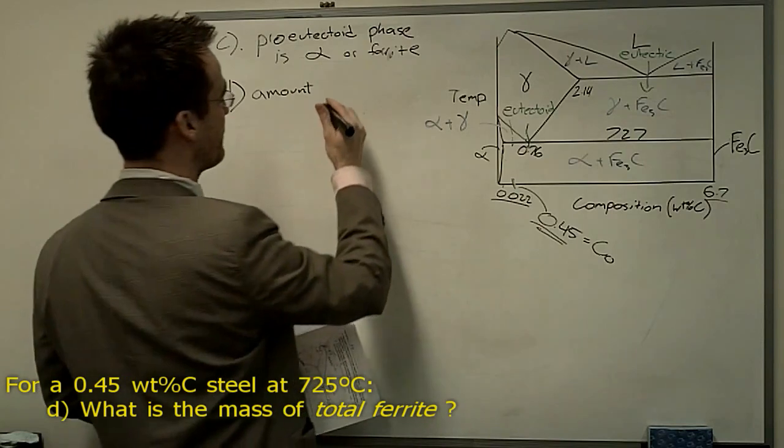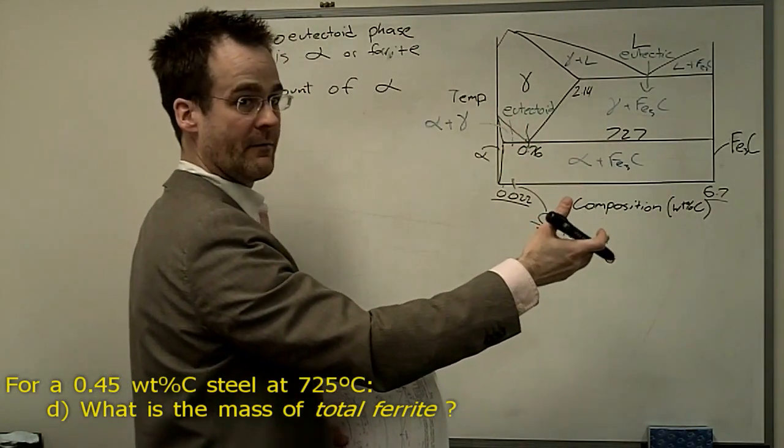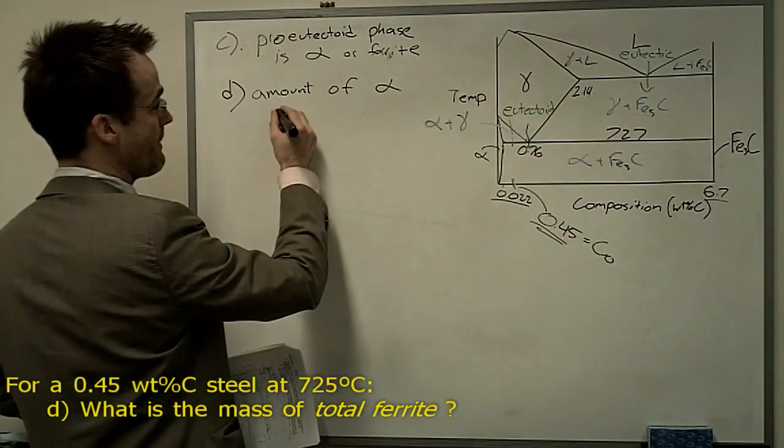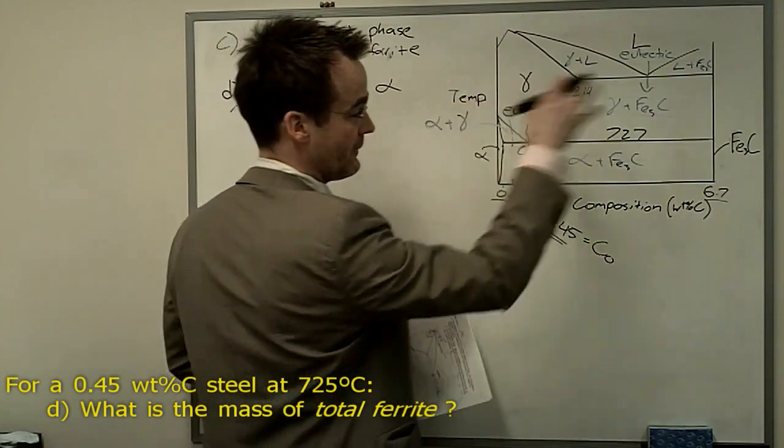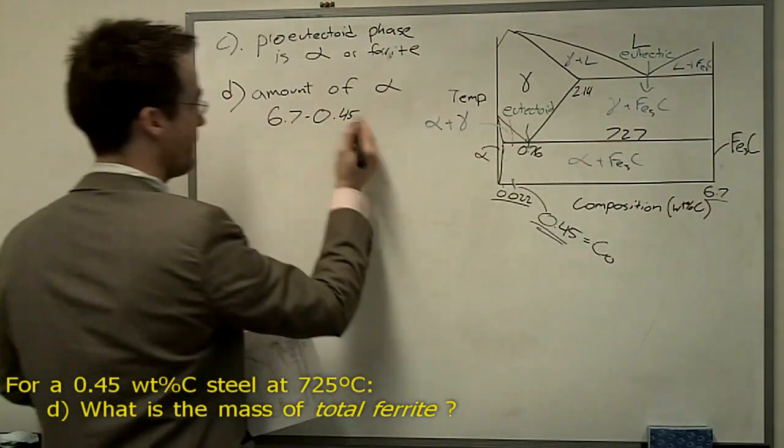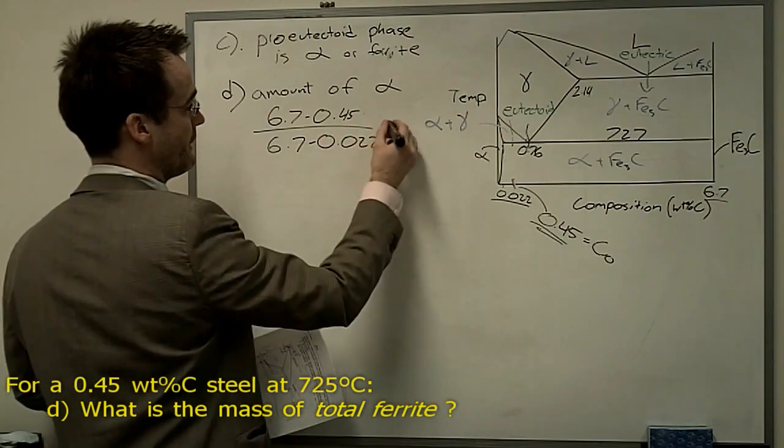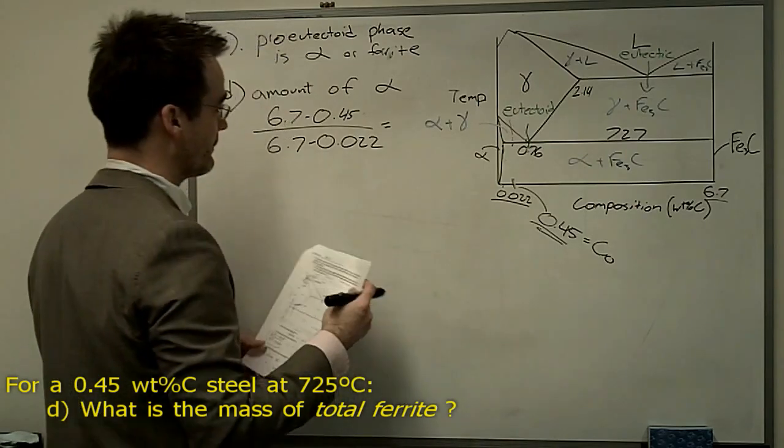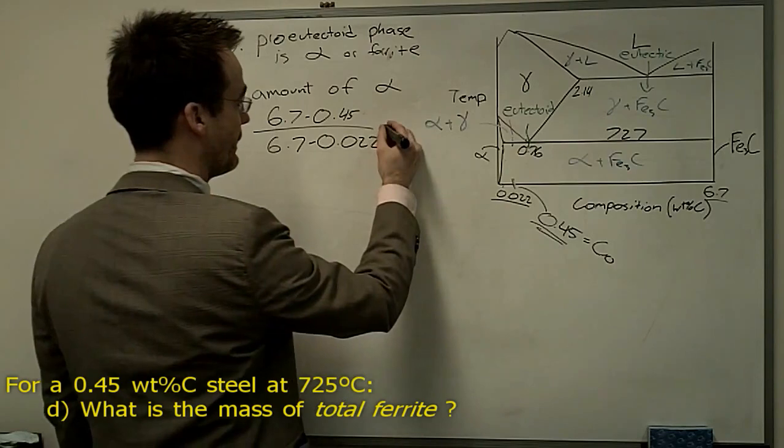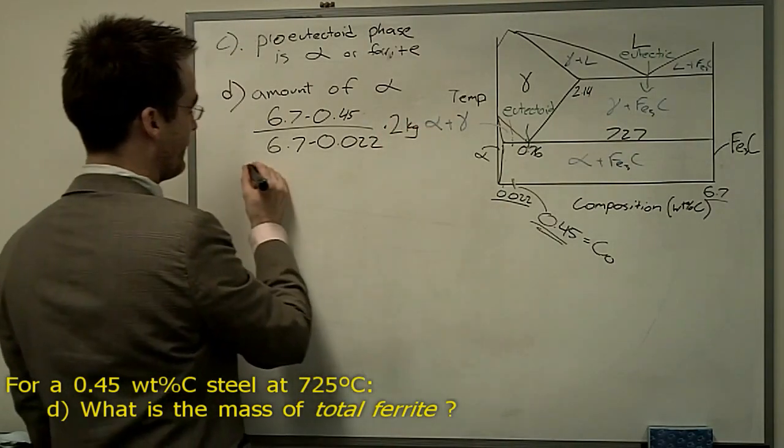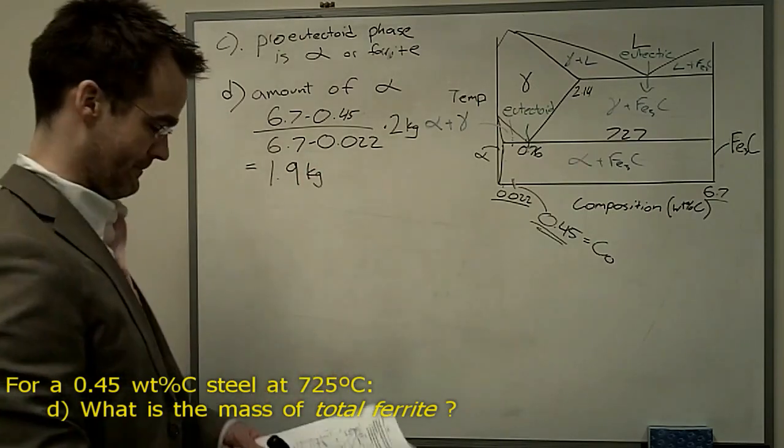So I like to say the amount when we're dealing with the lever rule, so the amount of alpha total, not distinguishing between pro-eutectoid and ferrite in the perlite, this is the total, is going to be 6.7 minus 0.45, and it's the opposite side, we're dealing with the phase on the left, so the opposite side of the lever is going to be from here to here, divided by the total length of that tie line, which is 6.7 minus 0.022. It turns out that, actually, sorry, the question asks us for the mass of ferrite, and it gives us in the question that it's 2 kilograms, so we're going to actually do one extra step, we're going to multiply by 2 kilograms, and we're going to get our final answer, which is going to be 1.9 kilograms, mostly ferrite, a little bit of cementite.